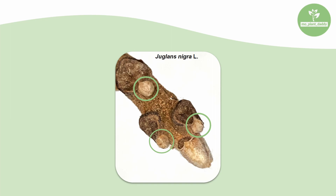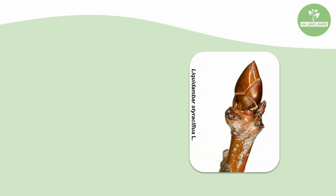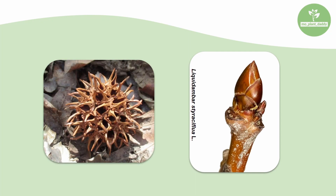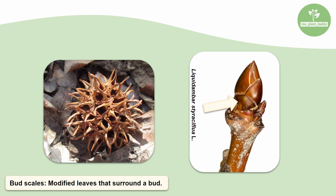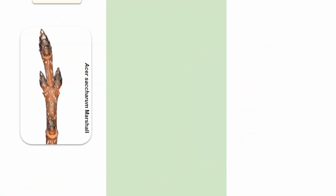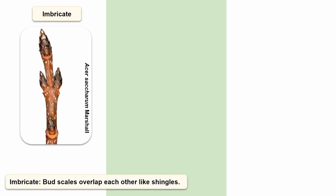Both lateral and apical buds may contain bud scales. In order to understand bud scales, we will be looking at the twig of sweetgum. Sweetgum trees produce these infamous spike balls every year. So what is a bud scale? Bud scales are modified leaves that surround a bud. Bud scales can be arranged in different patterns. The first and most common of these patterns is named imbricate — this is when bud scales on a twig overlap each other like the shingles on a roof. An example of imbricate bud scales would be a sugar maple twig.